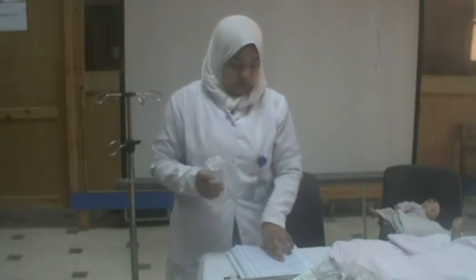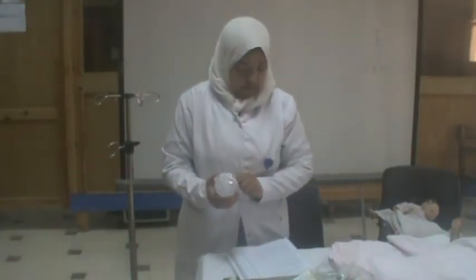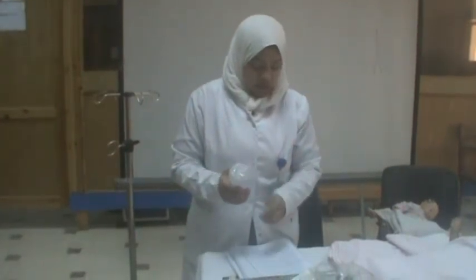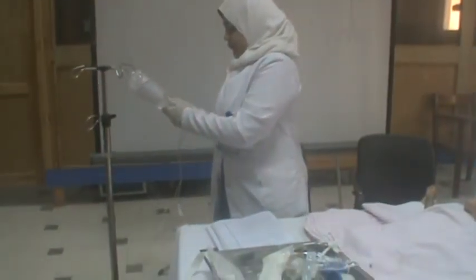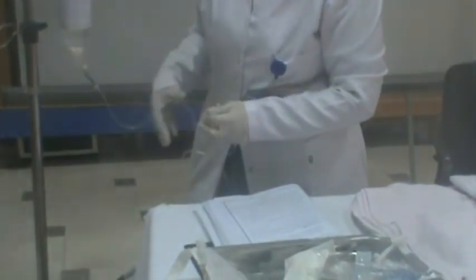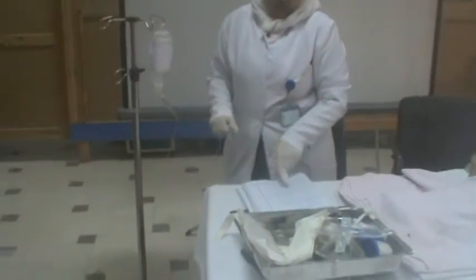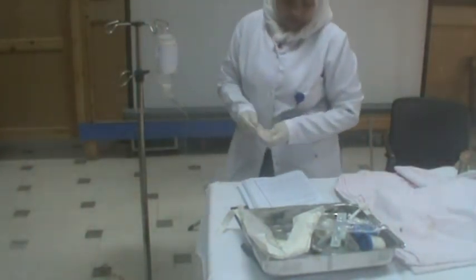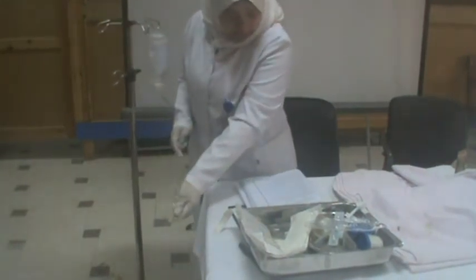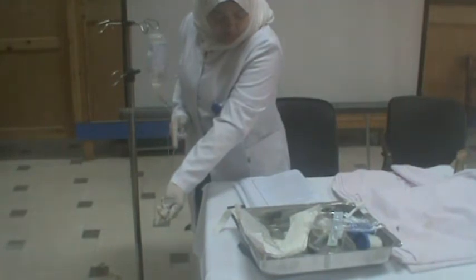Write the date on the label including room number, child's name, components, start time, and drip rate, then place the label on the bottle. Remove the protective cap from the spike of the infusion set and insert it through the outlet port of the bottle. Squeeze the chamber and fill it one-third to one-half with solution to prevent air bubbles from entering the tubing.